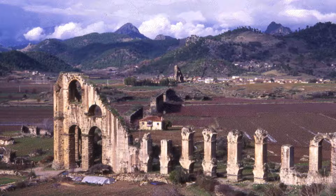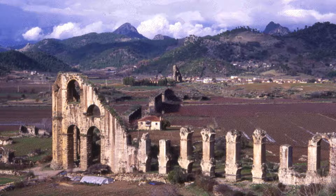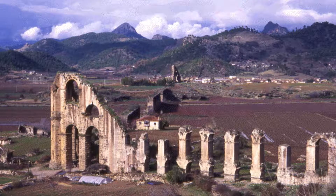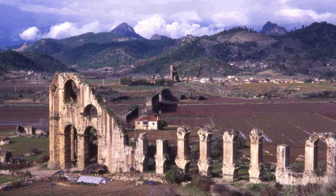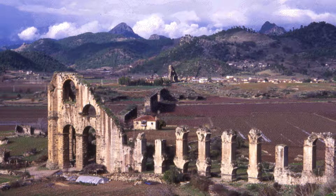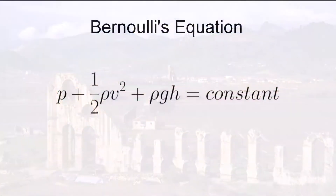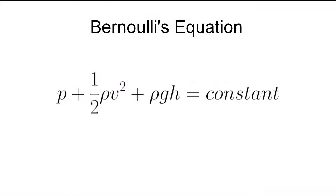By the Bernoulli equation, we can follow the flow of the water to further understand this idea. The equation states that all points within the closed siphon system are equal to a constant defined by the sum of the static pressure, dynamic pressure, and hydrostatic pressure.